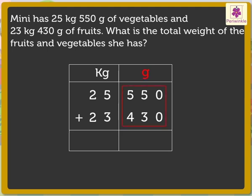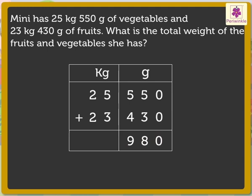First, add the grams. 0 plus 0 is equal to 0. 5 plus 3 is equal to 8. 5 plus 4 is equal to 9. So, we get 980 grams. Now, let us add the kilograms. 5 plus 3 is equal to 8. 2 plus 2 is equal to 4. So, we get 48 kilograms.